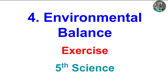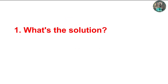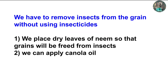Welcome to the SapnaZoomSchooling channel. Today we are going to learn the exercises of the fourth chapter, Environmental Balance, from fifth grade science. The first question is: what is the solution to remove insects from grain without using insecticides?